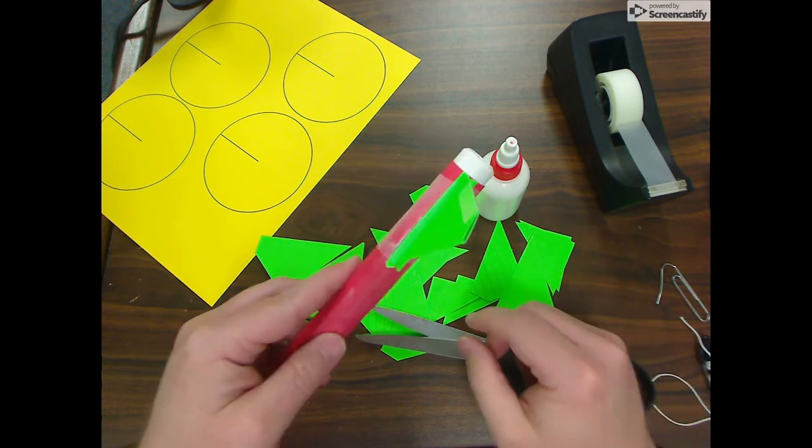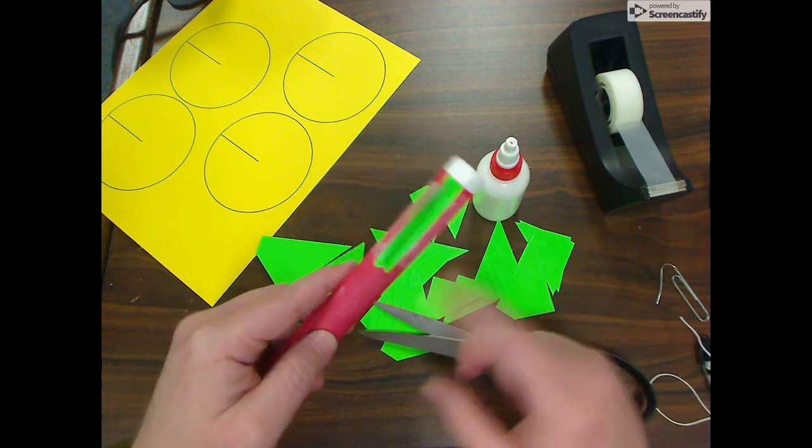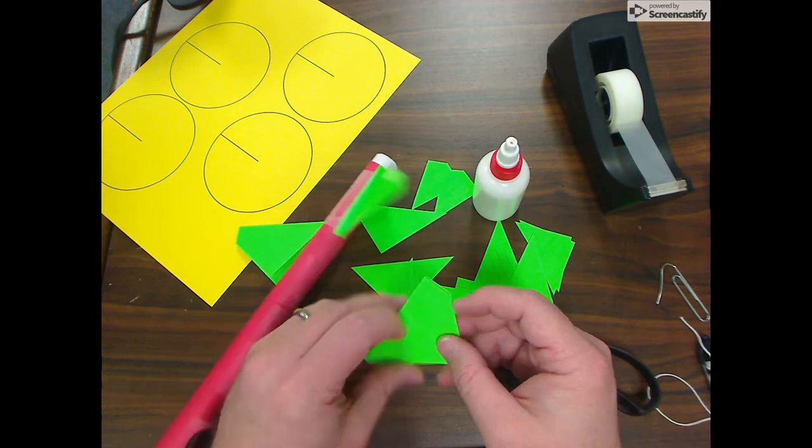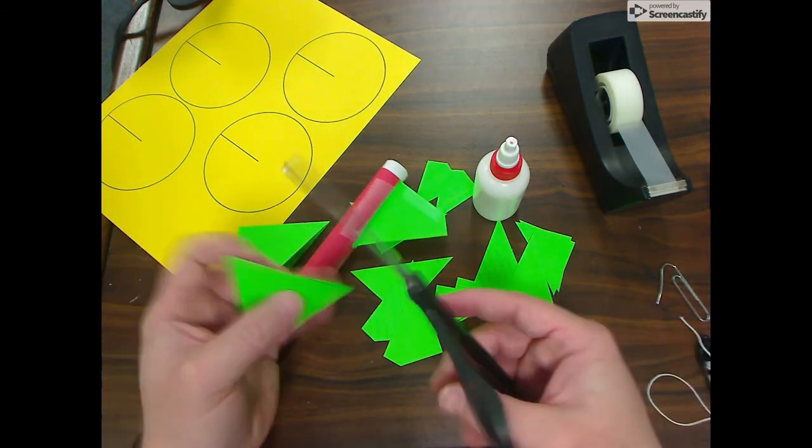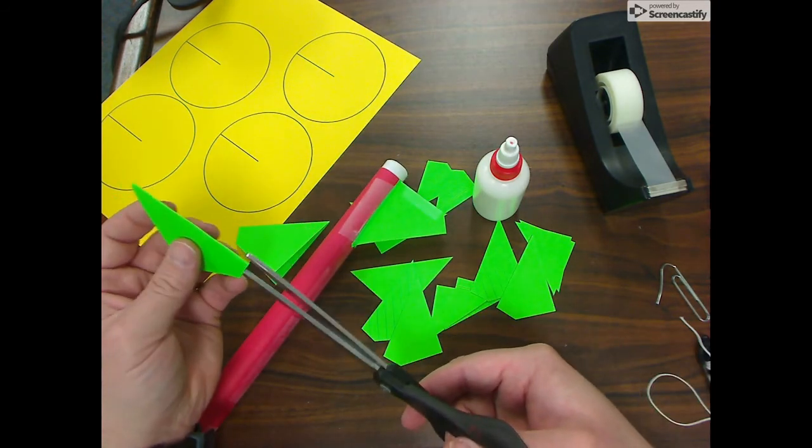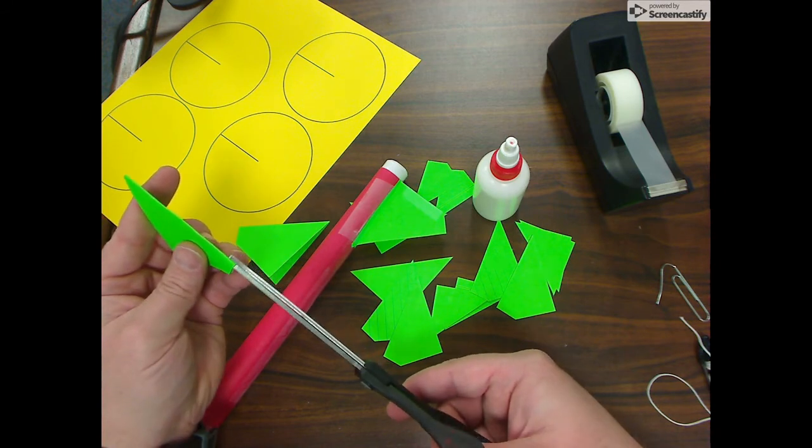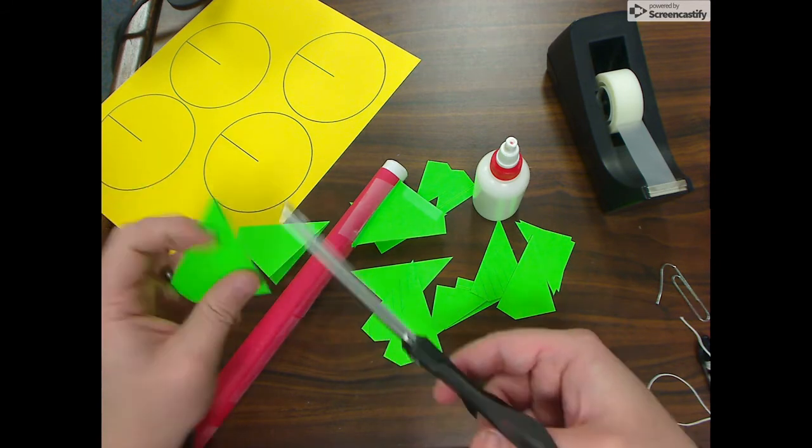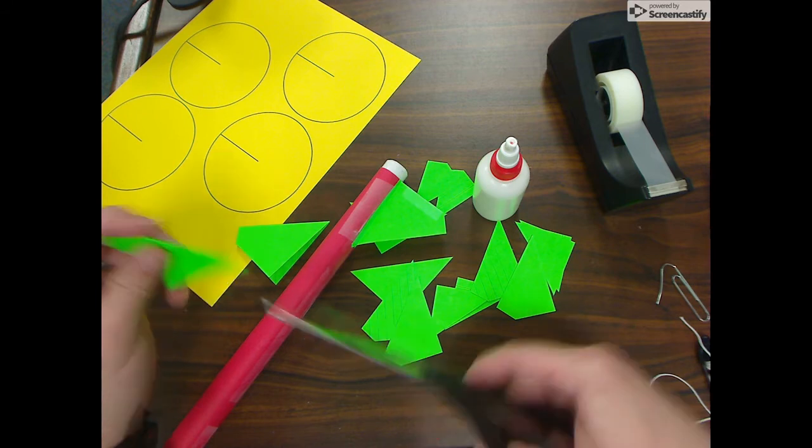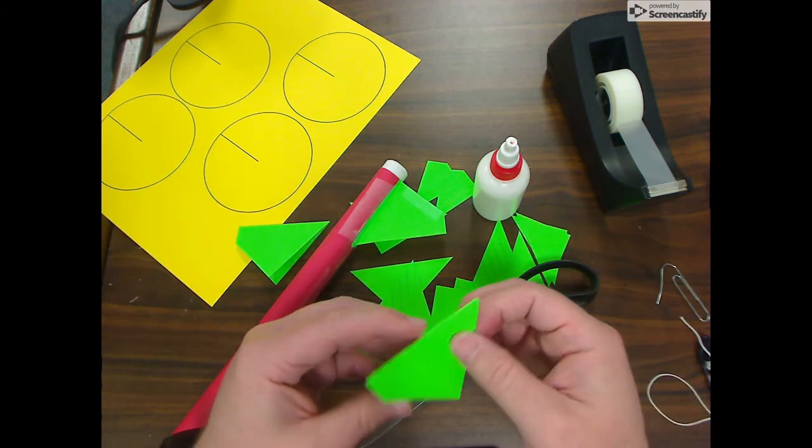All right, so we're going to repeat that process two more times and we're going to go all the way around our rocket, and we are going to make sure that we have three fins and they are spread out equally around the rocket.